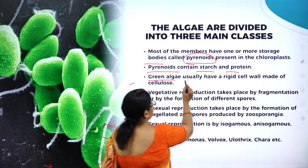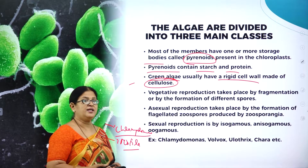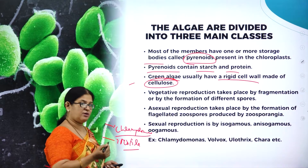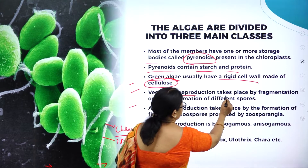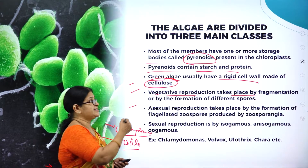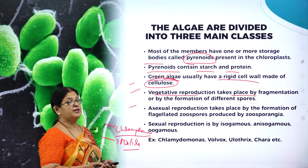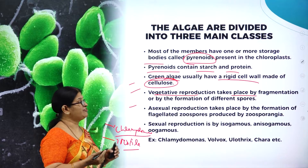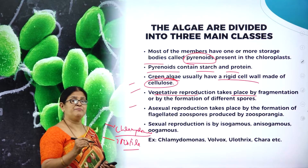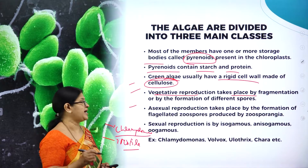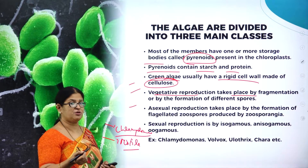Green algae usually have a rigid cell wall made up of cellulose. Vegetative reproduction takes place by fragmentation — when the filament breaks into pieces called fragments, each fragment has the capacity to develop into a new plant. That mode of vegetative reproduction is called fragmentation, which is a type of asexual reproduction.